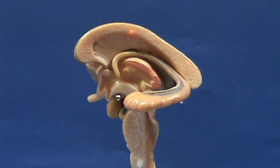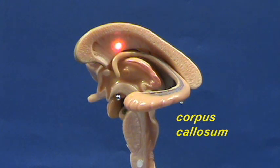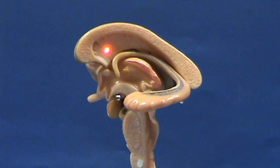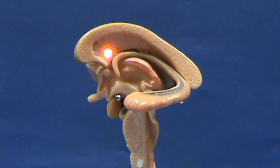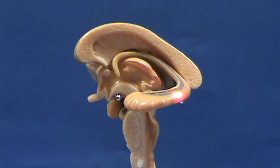Here is the corpus callosum, and right underneath the corpus callosum, this is a wall that separates the lateral ventricles from one another. This is called the septum pellucidum, and this structure is the hippocampus.